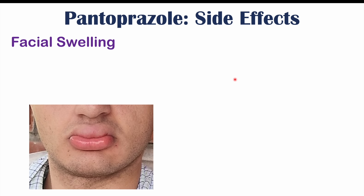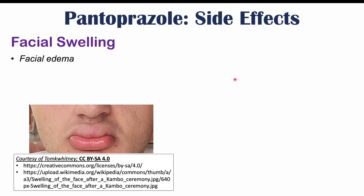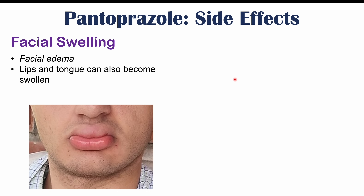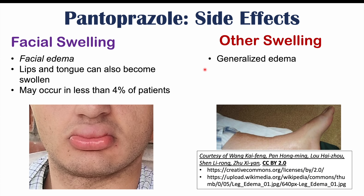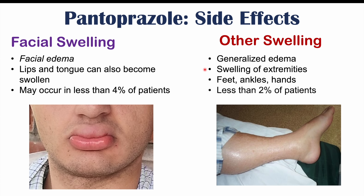Facial swelling, or facial edema, is another side effect of pantoprazole use. The lips and tongue may become swollen, and this may occur in less than four percent of patients. Generally the facial swelling is not severe, but if it starts to affect the lips, tongue, or throat more severely, it can cause airway obstruction, making it a significant side effect in some patients. Generalized bodily swelling, or edema, can also occur, including swelling of extremities such as feet, ankles, and hands, generally in less than two percent of patients.